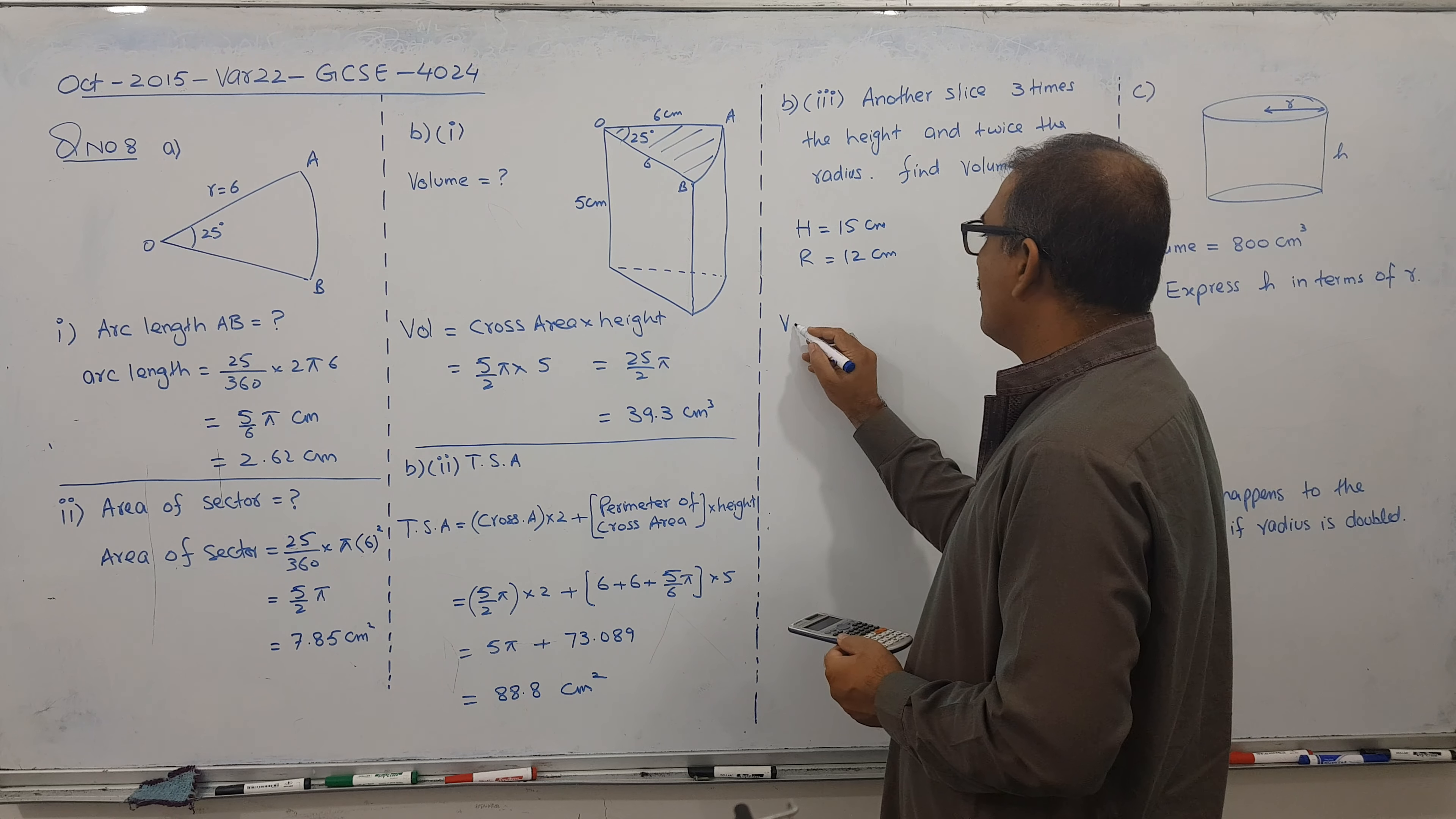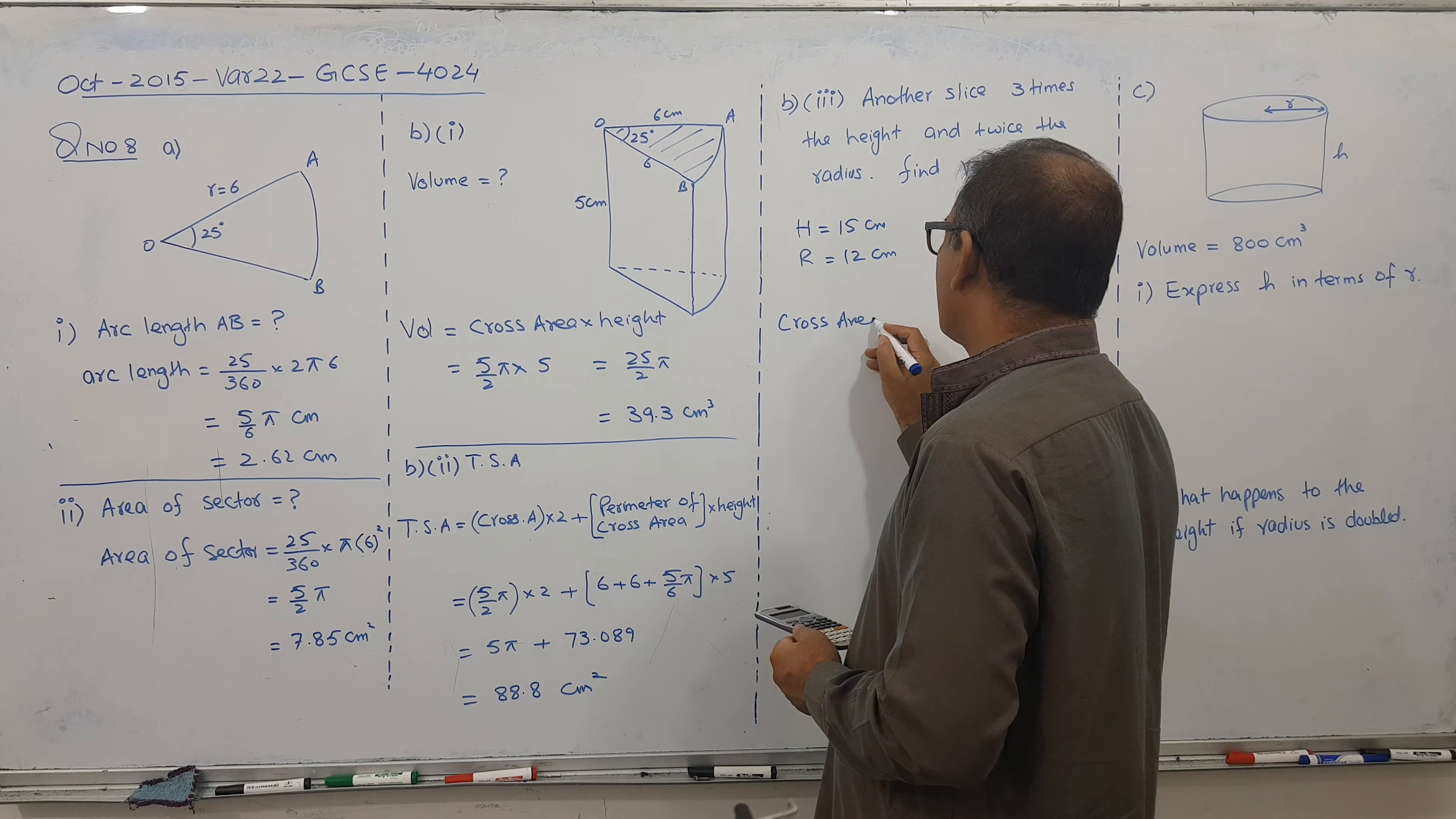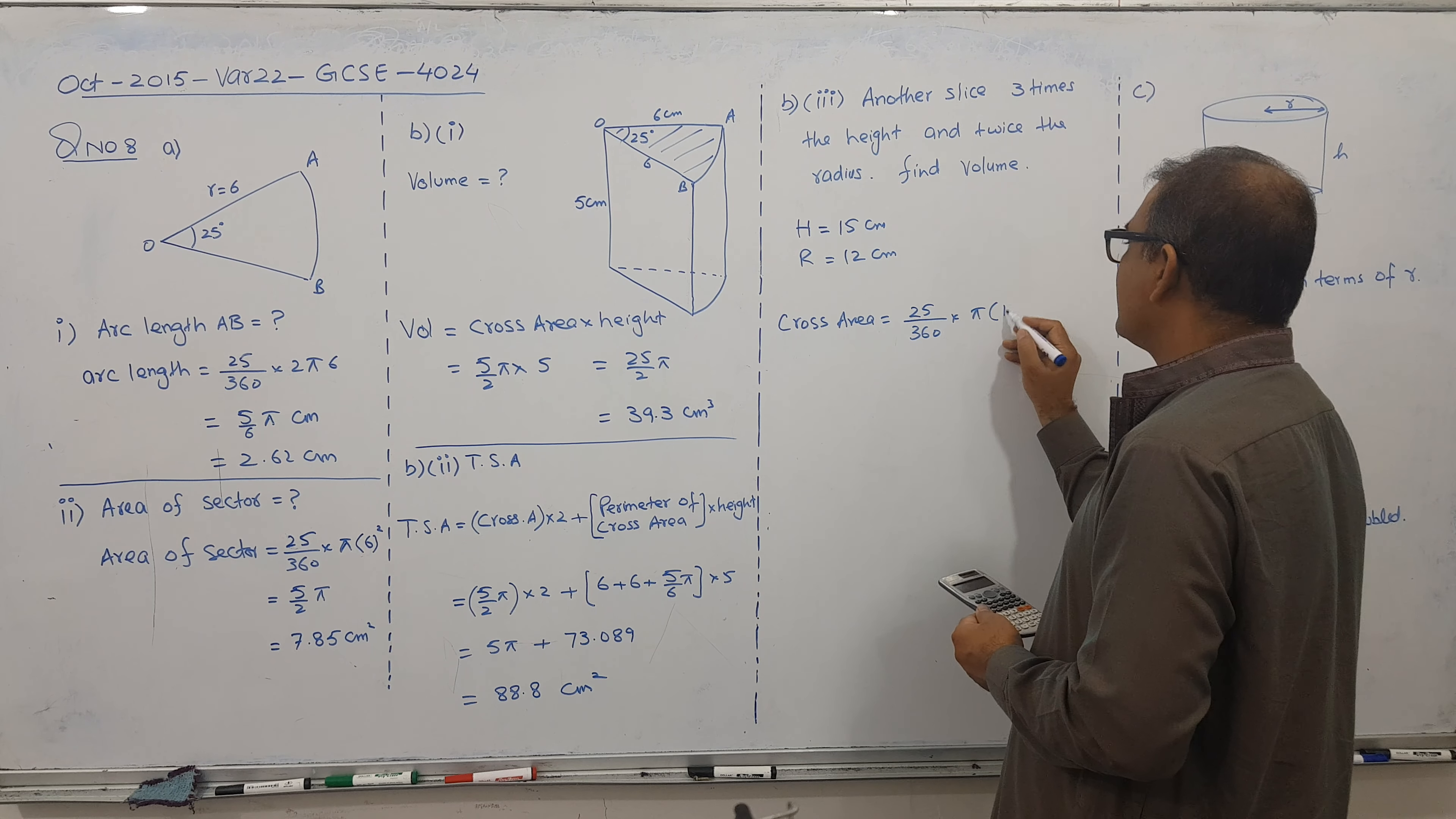So what is the volume formula? But first I need, you know, cross area. So cross area is theta. Angels remain same. Theta by 360. And pi r squared.